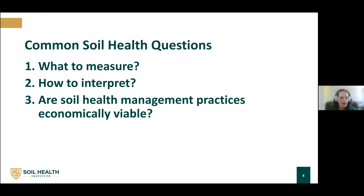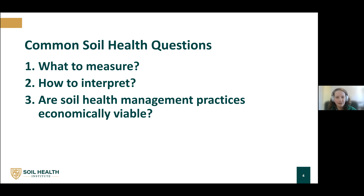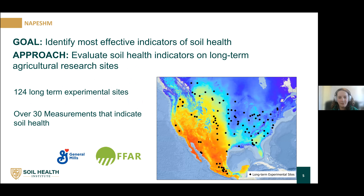The second question I'm addressing today is: after we figure out what to measure, how do we interpret those measurements? We often hear that we can't treat soils the same in Iowa as in New York. The big question for the second half of the presentation is: after these management practices are adopted and we know they're improving soil function, are they economically viable? To answer that first question, the Institute conducted a huge study starting in 2019 to identify the most effective indicators of soil health, evaluating over 30 different common indicators on long-term agricultural research sites across the U.S., Canada, and Mexico — 124 sites total.